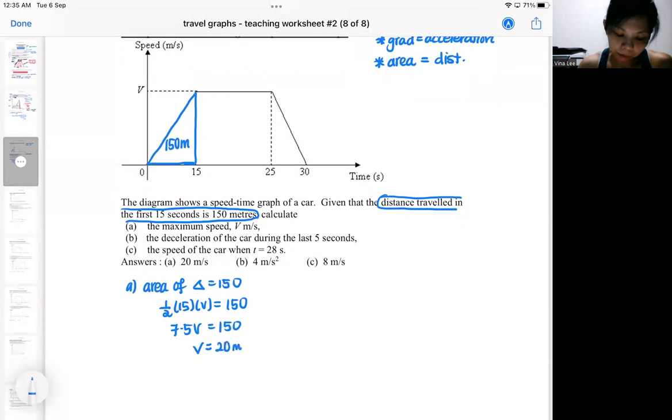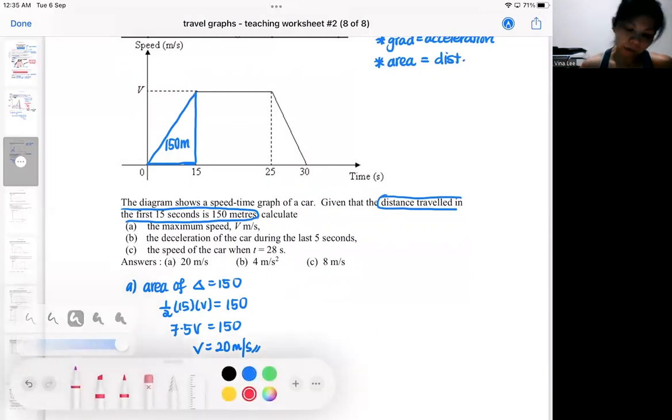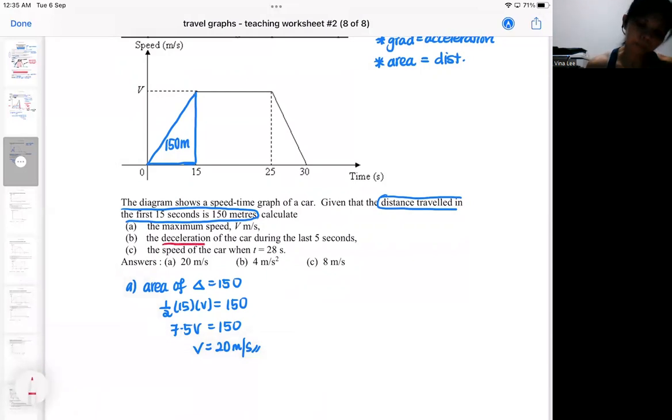So please remember to give units. That is the area feature. The second part, part B, we are allowed to find the deceleration. Deceleration again is gradient, is how fast you are slowing down.